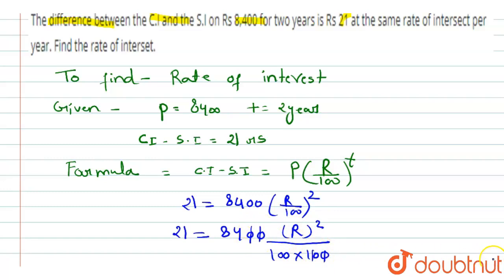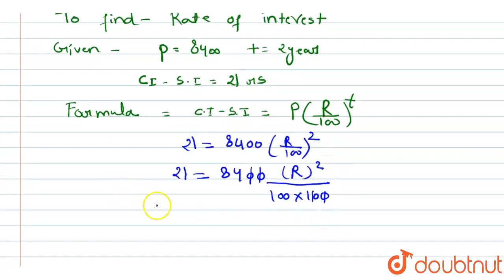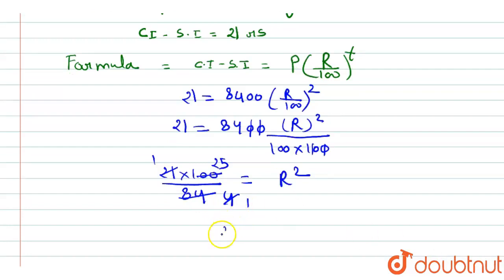Now we can further solve it for finding the value of r. We can write: 21 times 100 upon 84 equals to r squared. 21, 1 times and 4 times, 4 ones are 4, 25 equals to r squared.